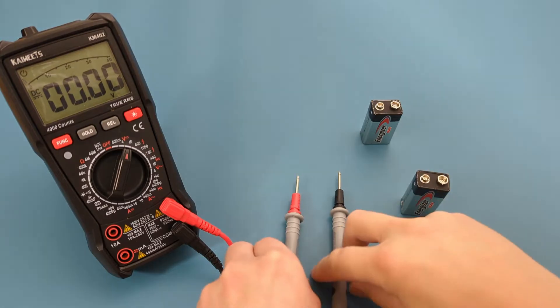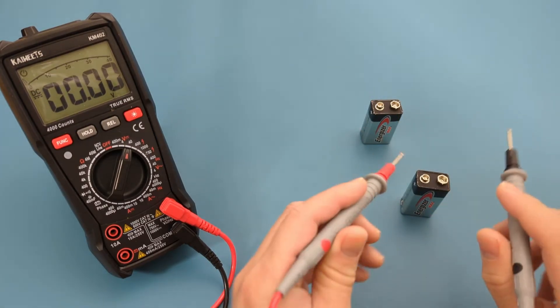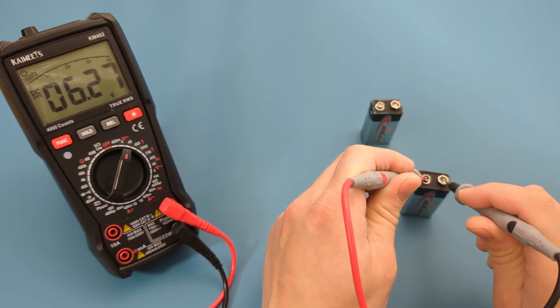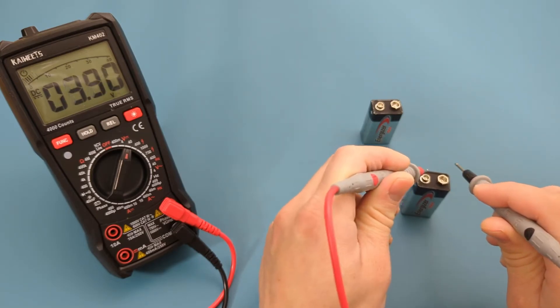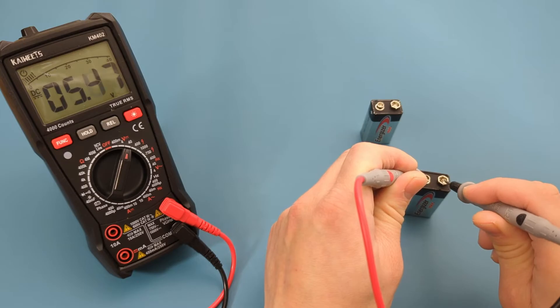Now let's test the other 9-volt battery. The reading shows 6.2 volts. This is a bad battery.